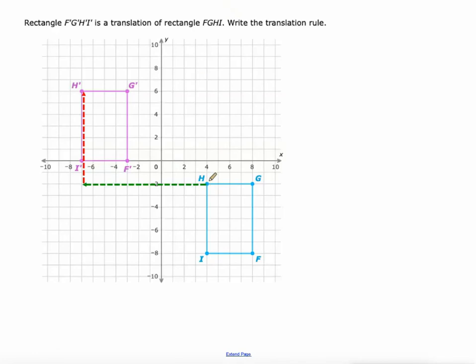To the left, starts at four, ends up at negative seven. That's 11 units to the left. We do left as a negative. And then how far does it go up? It starts at negative two and ends up at six. That's an increase of eight.